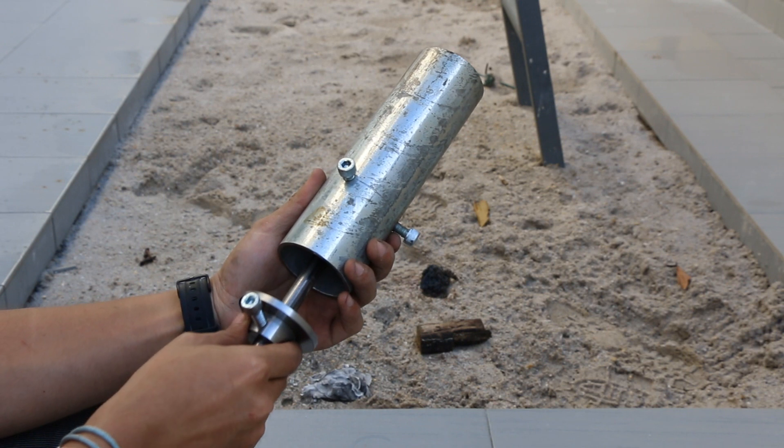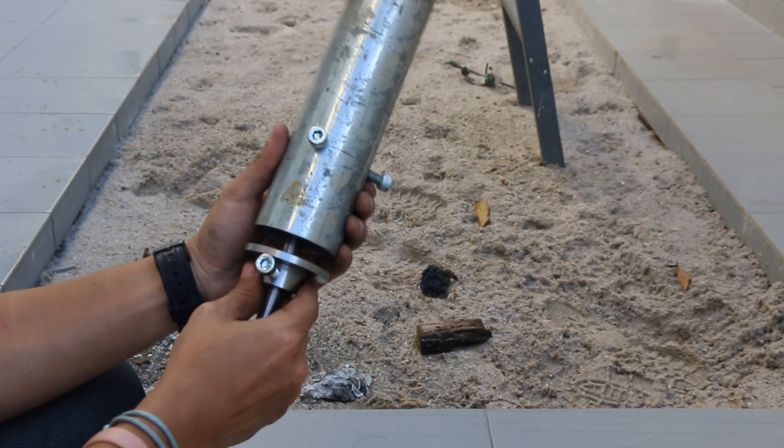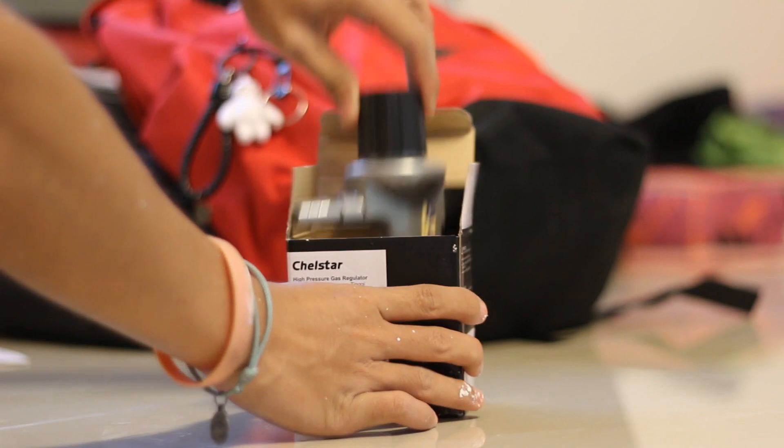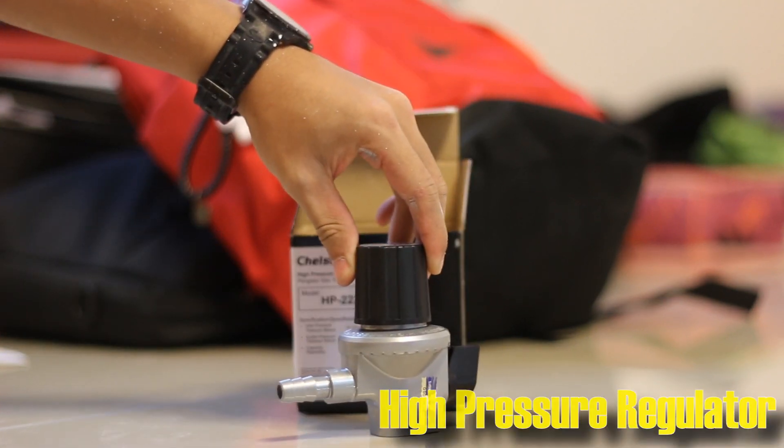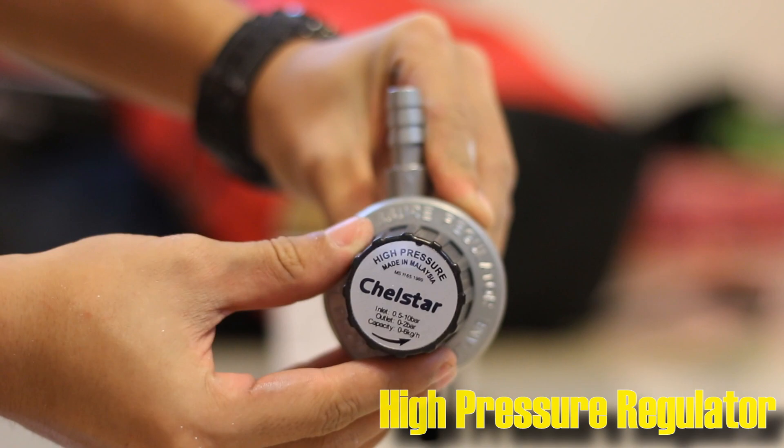The end cover is actually used to control the amount of air entering the pipe. Other than that, I have bought a high pressure regulator from the hardware store for only $48.